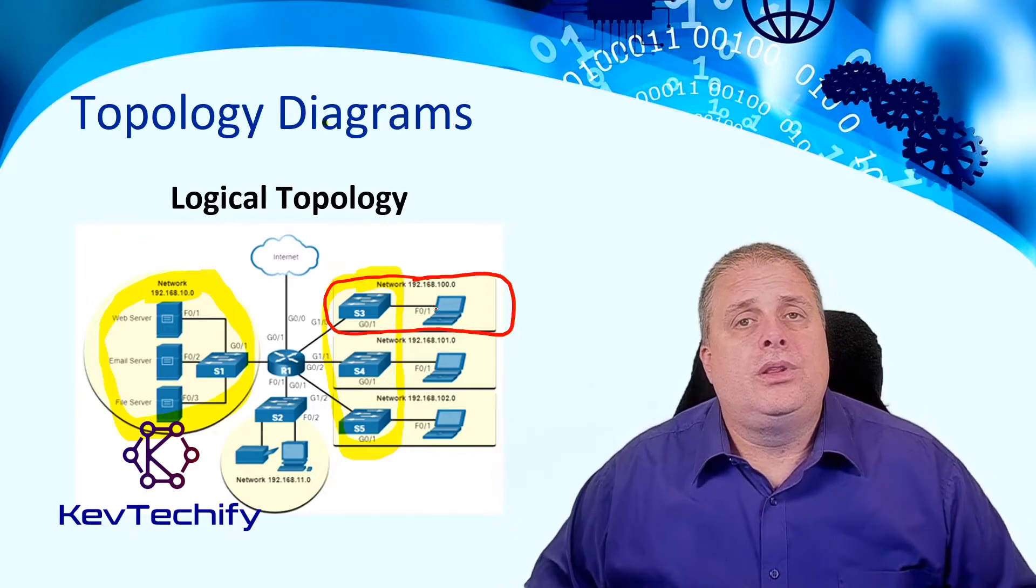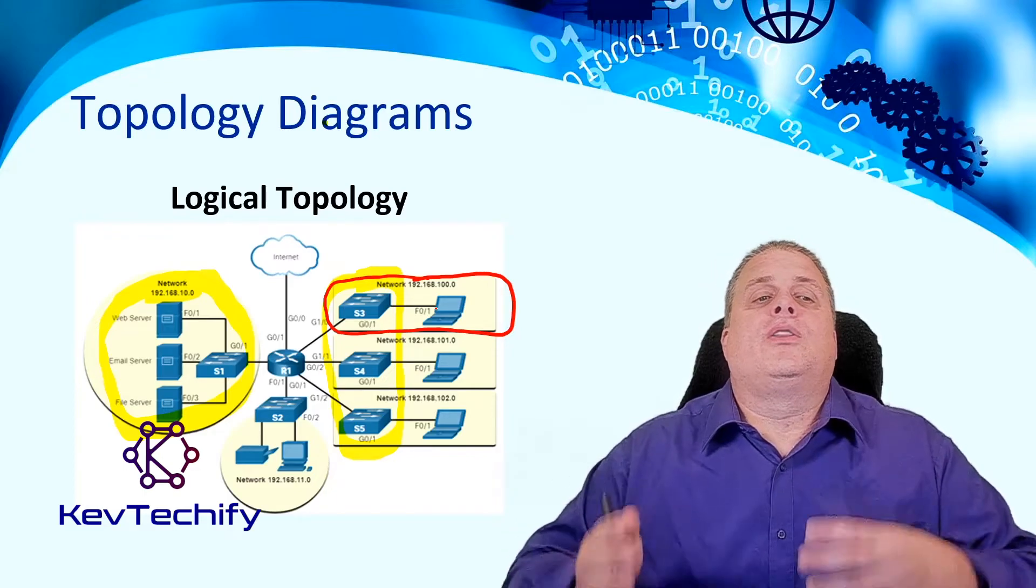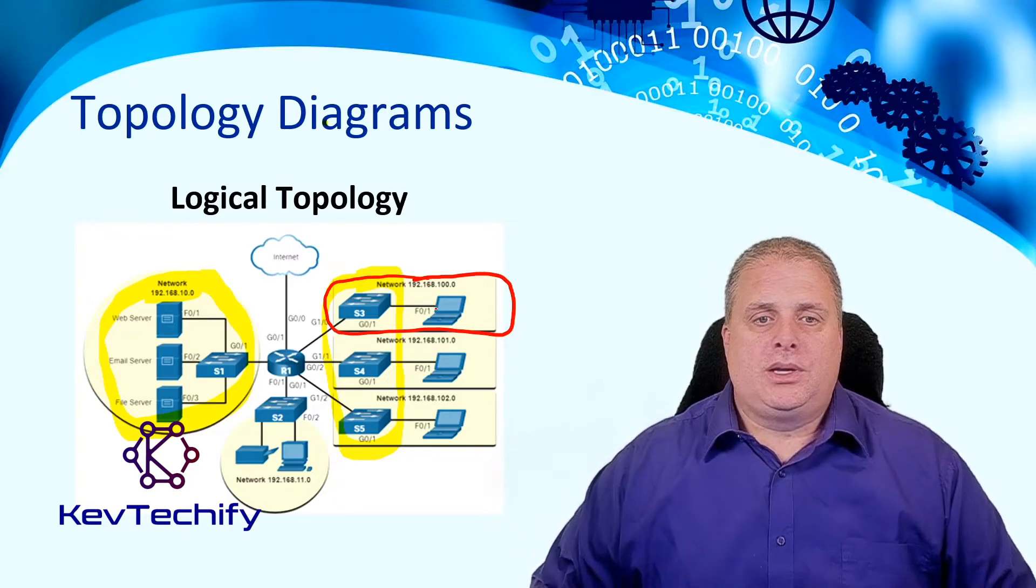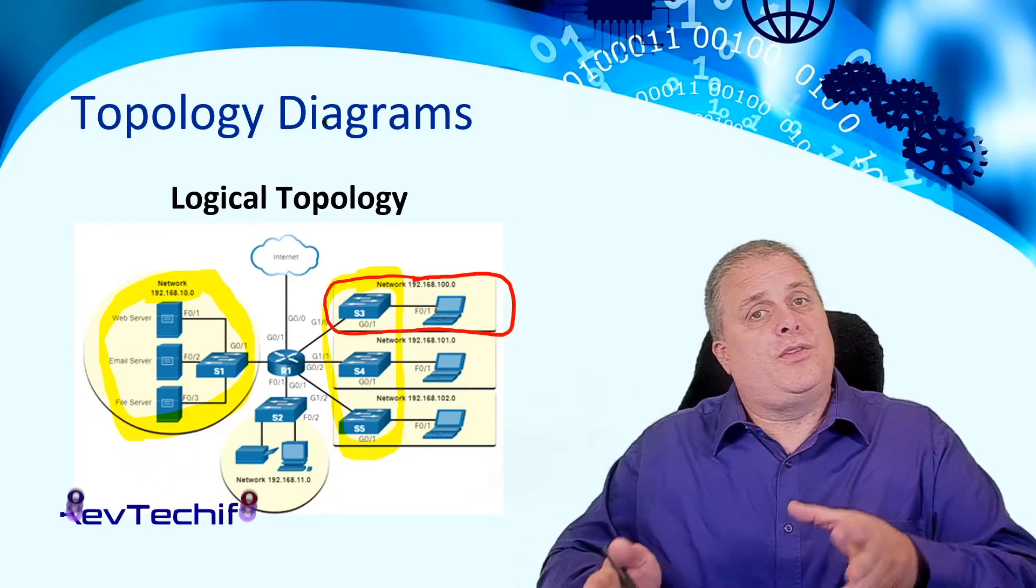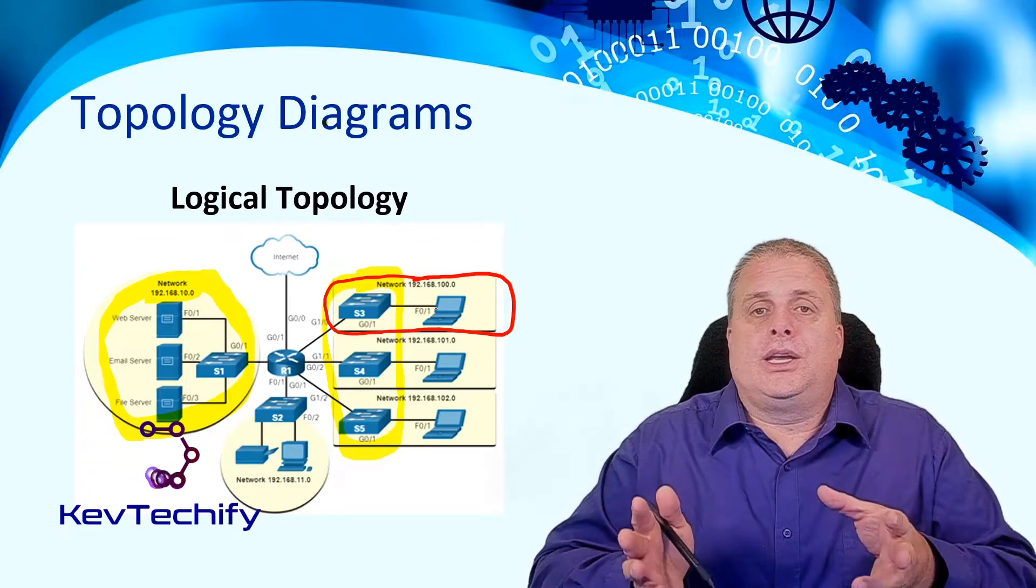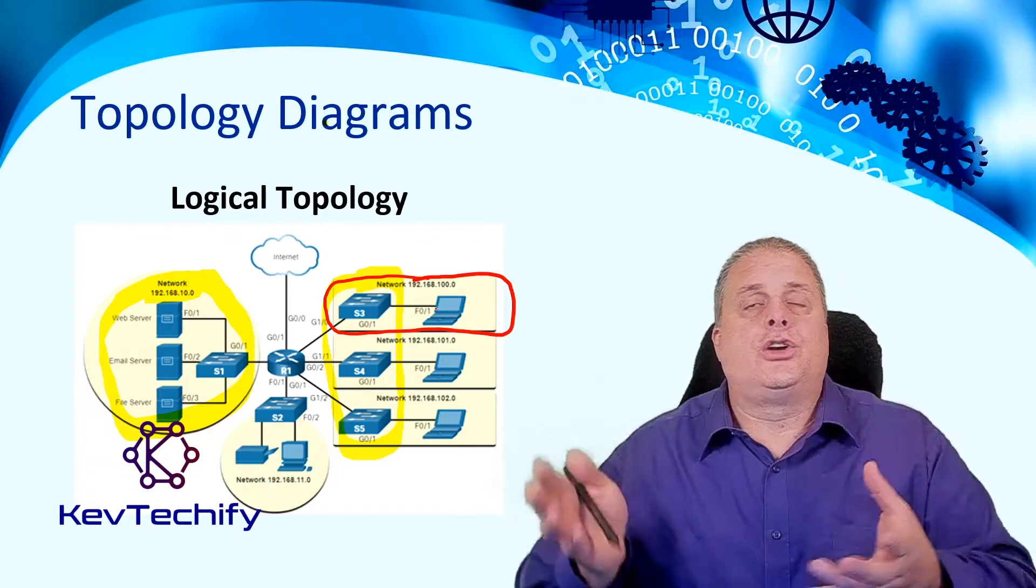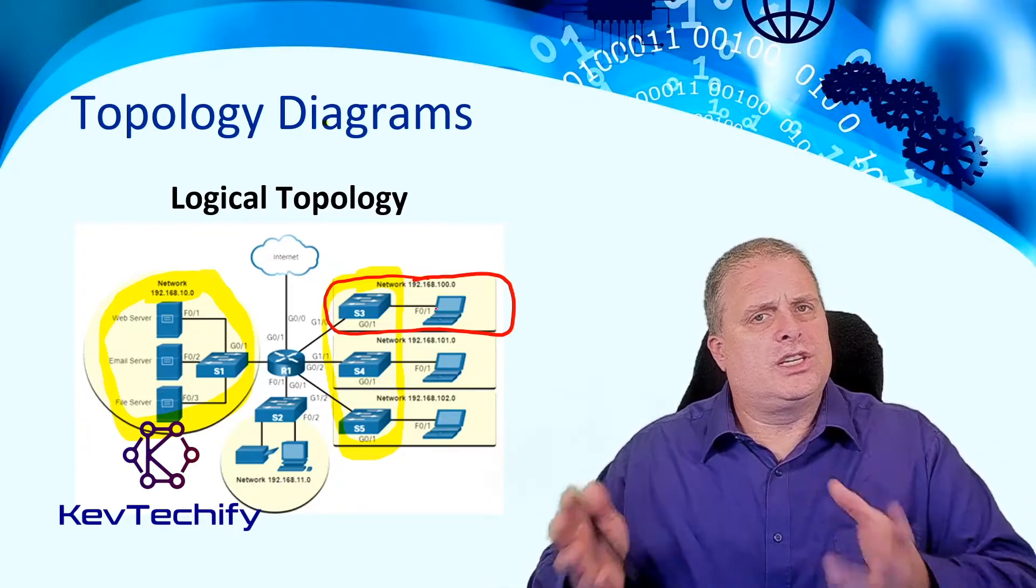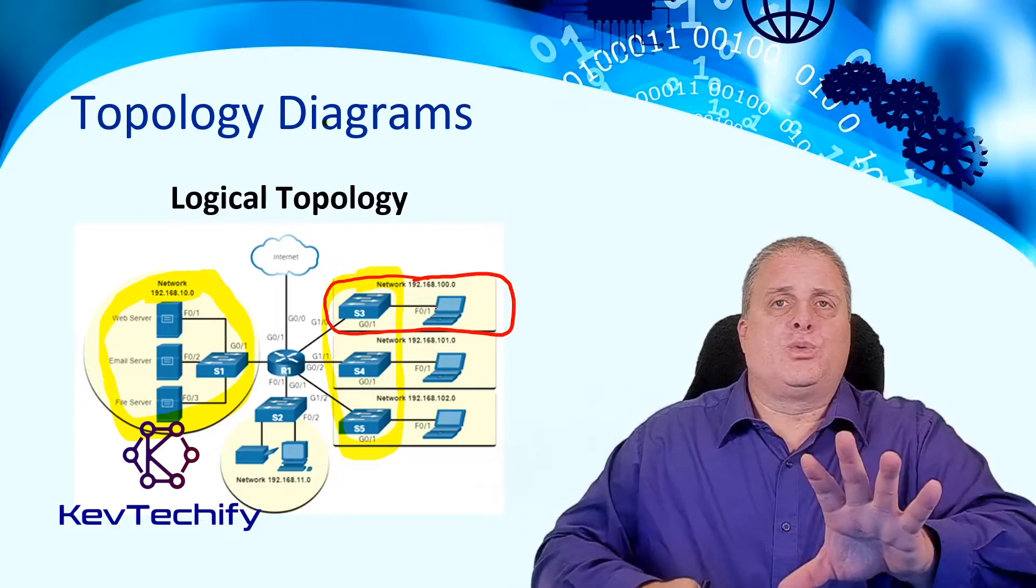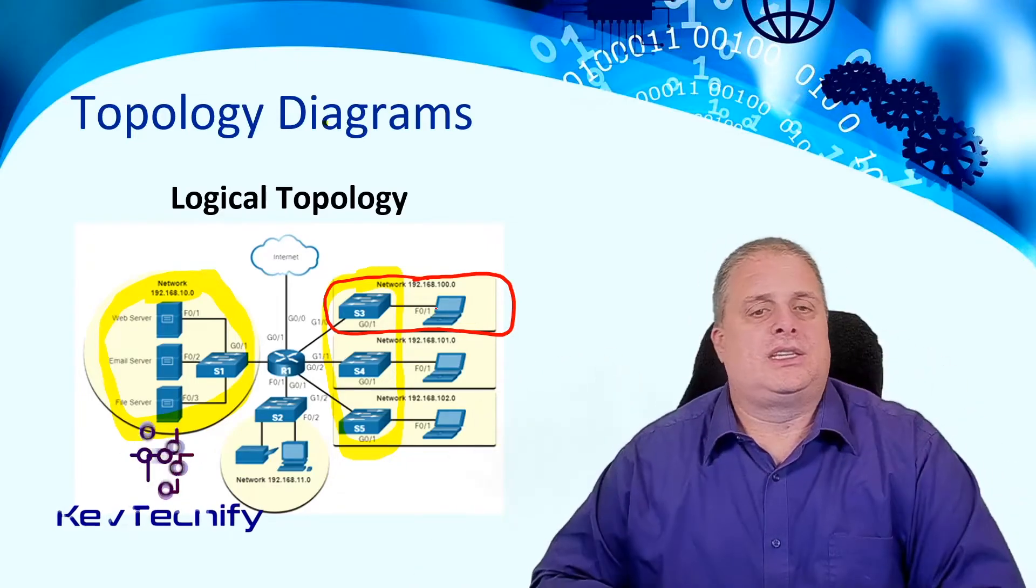Now, as we go through these, typically we're going to talk about logical diagrams. Because we're not really concerned with how that wire is ran. Maybe at some point in life, if you're designing a building, looking at setting up some equipment, you're going to be concerned how those wires are ran. But for the most part, when you're dealing with your networks and you're designing them, you're going to be concerned that this switch and this computer is part of this network.